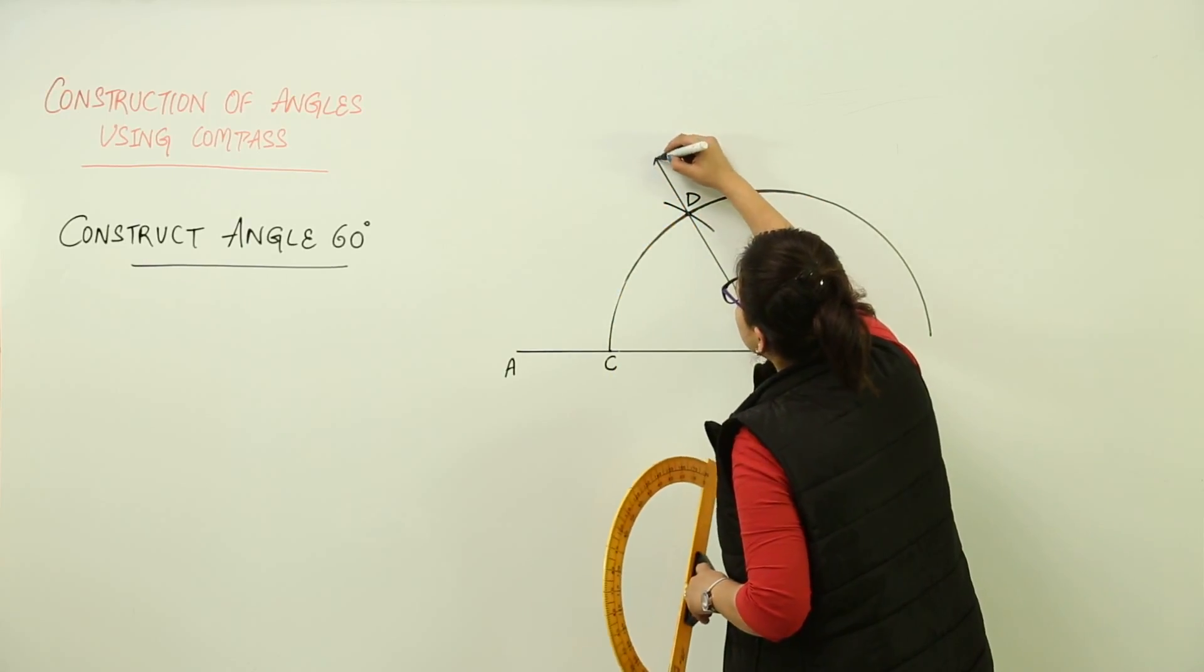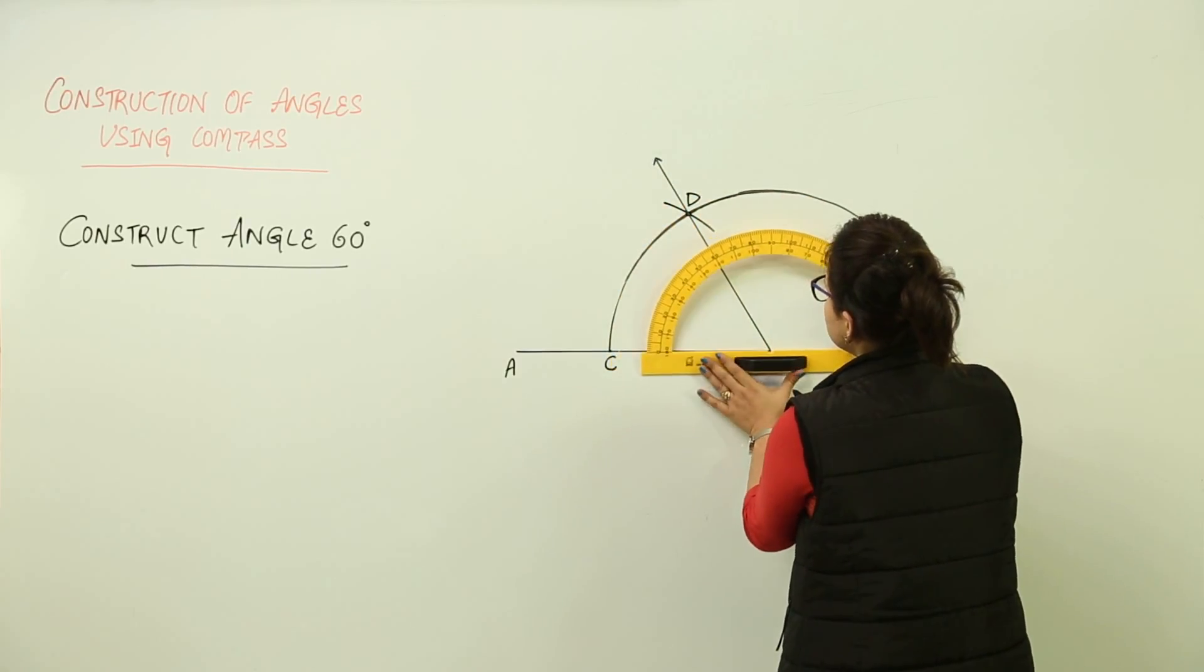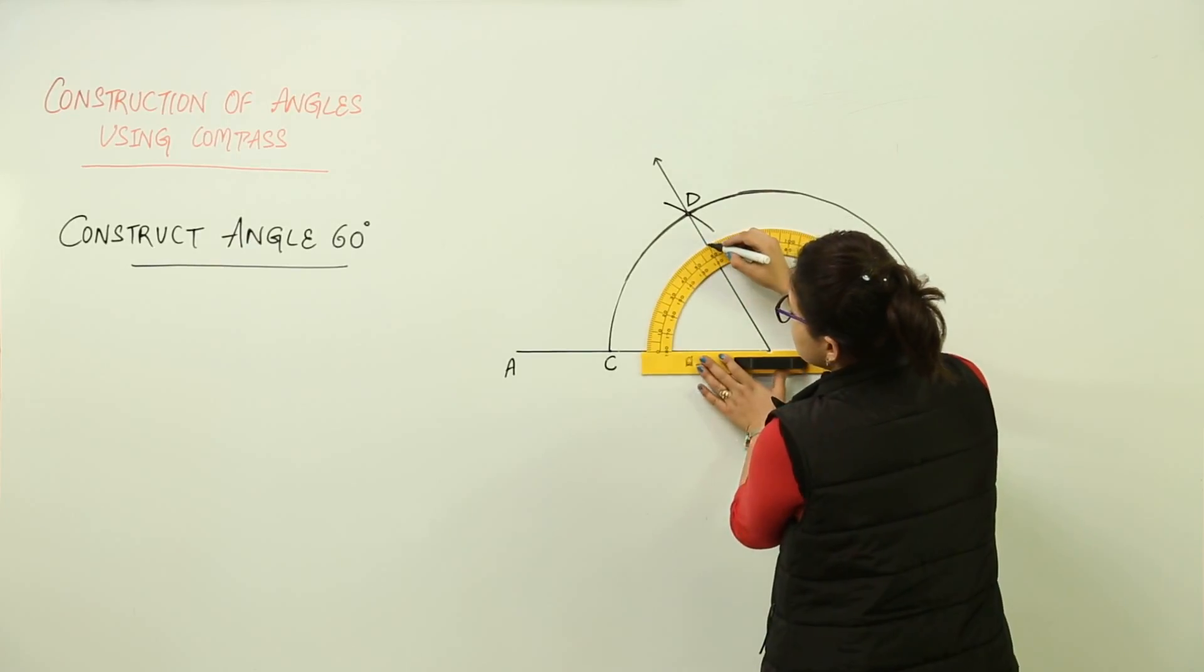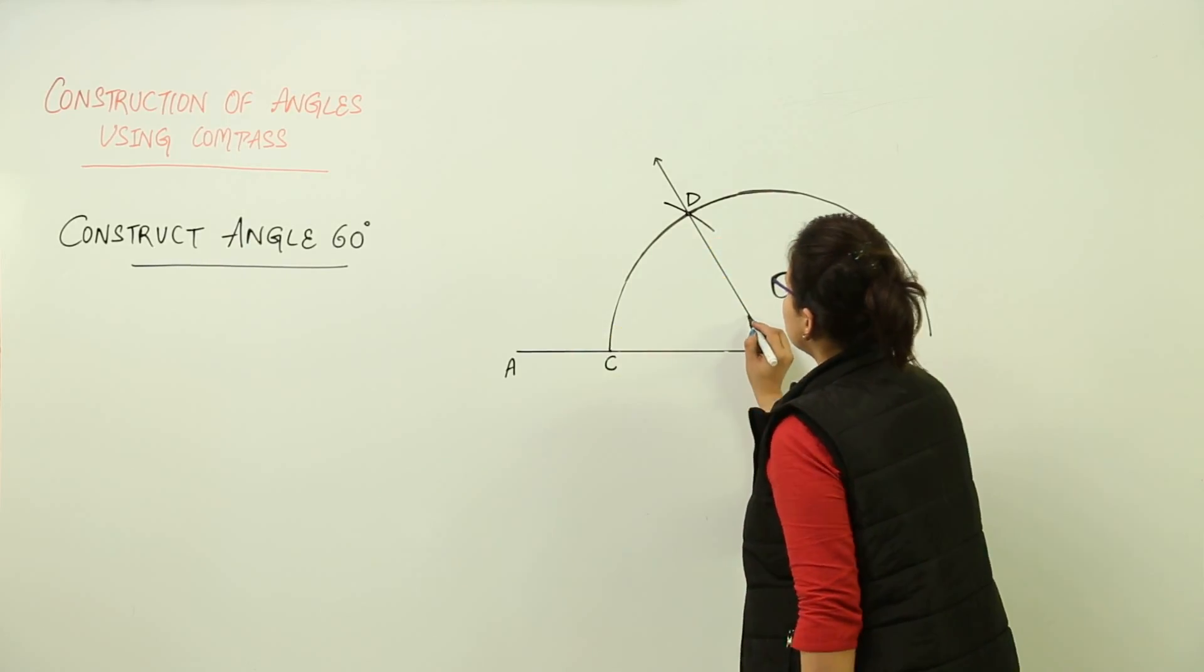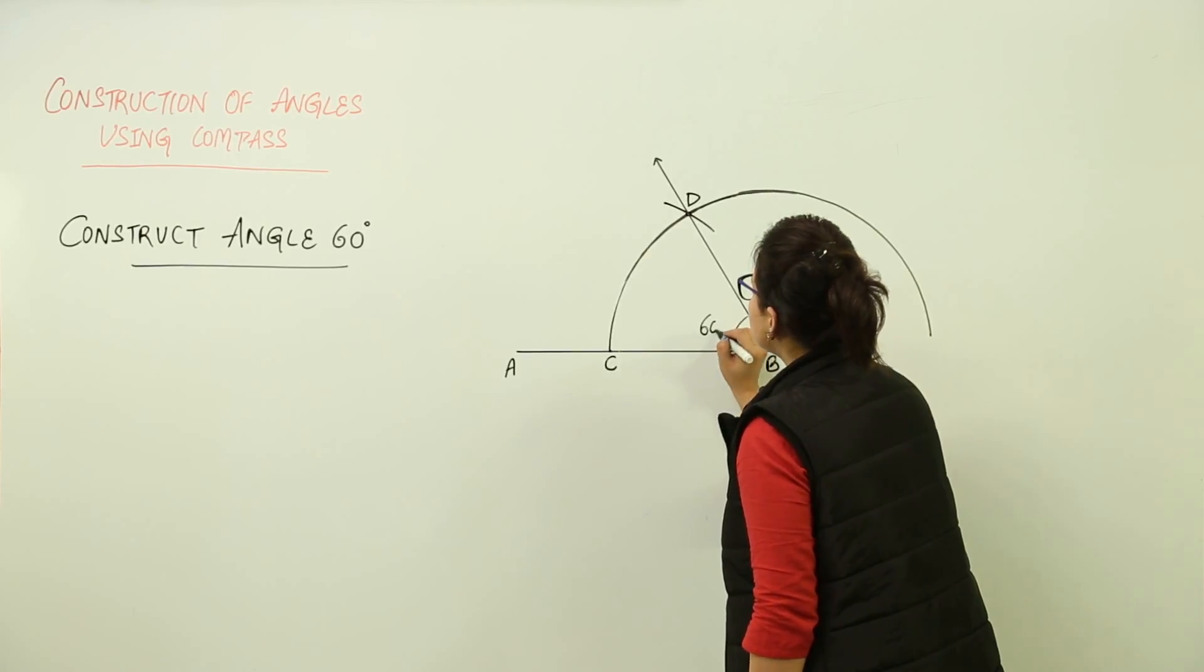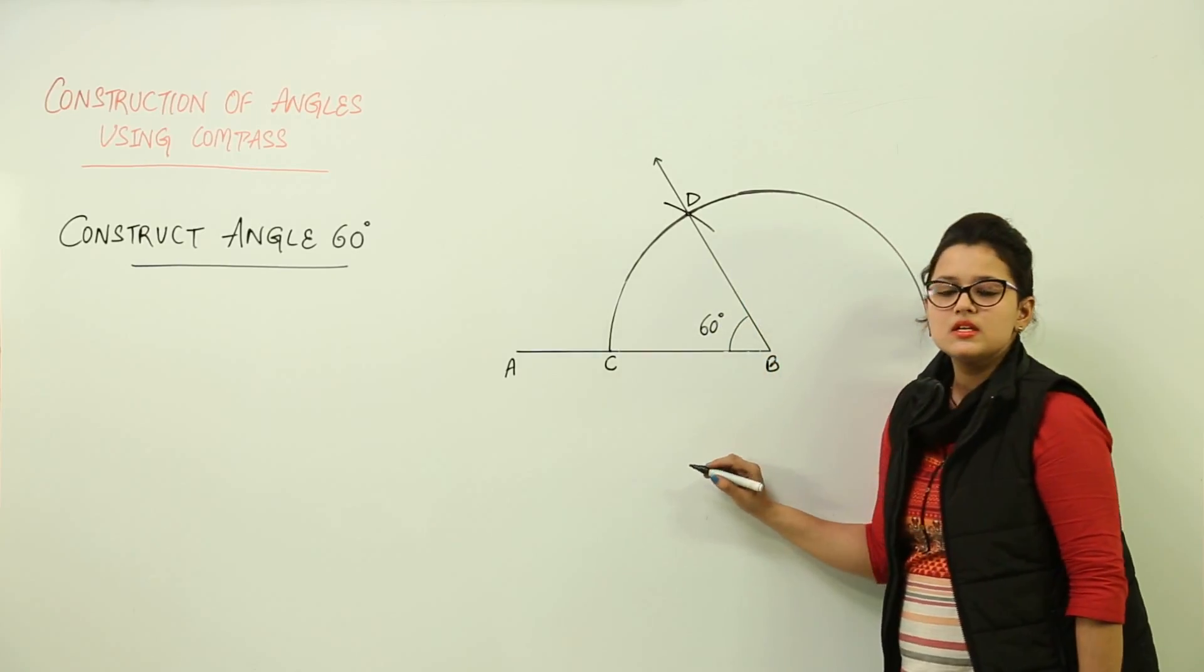You can check that and for that place the protractor and measure. Yes, it is coming exactly to be 60 degrees. So this is how you can construct an angle of 60 degrees using compass.